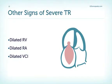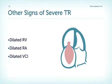The jet is important, but don't forget — just as we have indirect signs with mitral regurgitation, we also have indirect signs in tricuspid regurgitation. What are they? A dilated right ventricle — signs of volume overload. A dilated right atrium. And also a dilated vena cava inferior. These signs are not very specific, but they do give you clues about how severe TR really is.